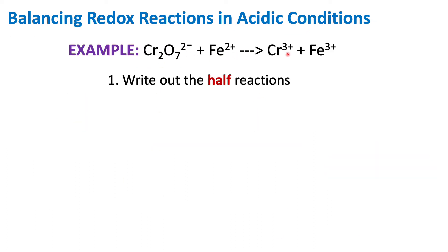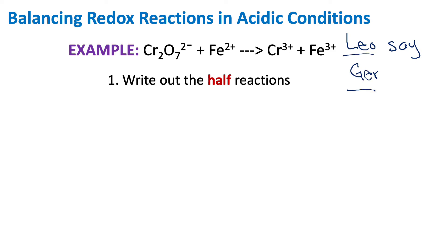We can see our overall reaction and we need to determine our half reactions according to step number one. Looking at this overall reaction it's pretty straightforward and we can intuitively tell what our half reactions are going to be. But if you can't intuitively tell, or if you get a more complex problem, there's actually a way to determine precisely what our half reactions are going to be. That goes back to the expression 'LEO says GRR' in order to determine what's being oxidized and what's being reduced, because if we can figure that out, we can figure out our half reactions.